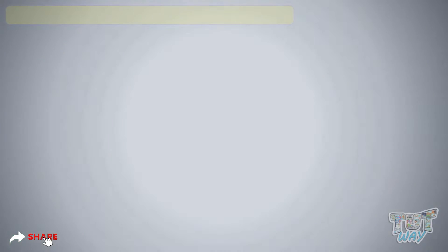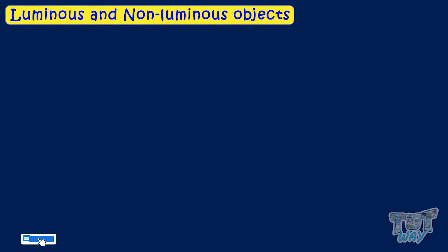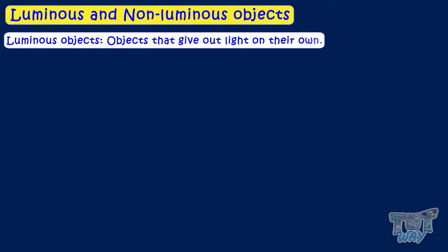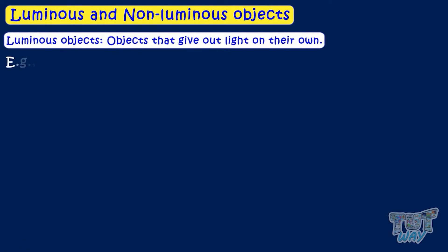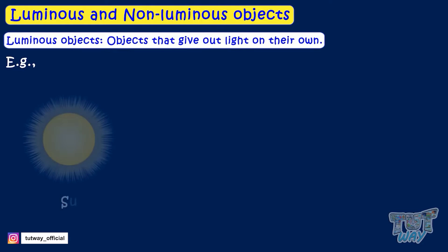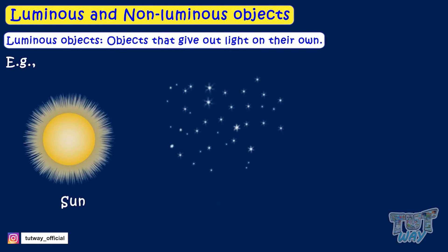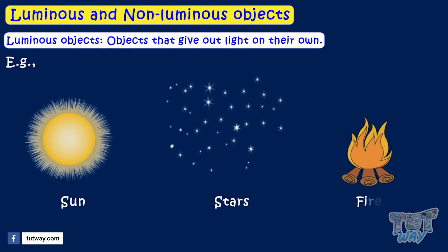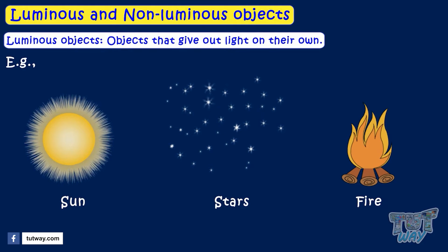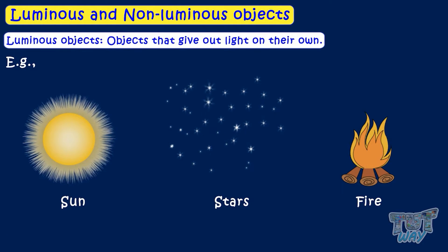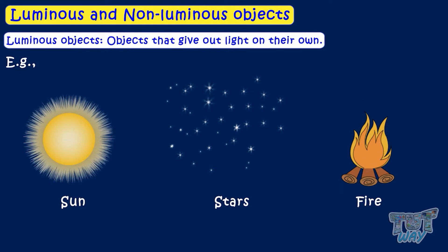Now let's see what are luminous and non-luminous objects. Objects that give out light on their own are known as luminous objects. Let's see some examples. Sun, stars, and fire glow and give out light on their own, so they are luminous objects.